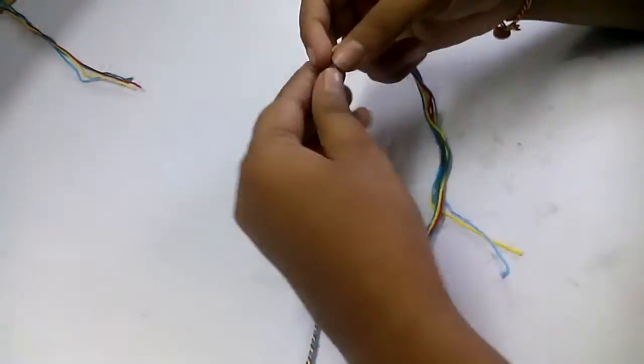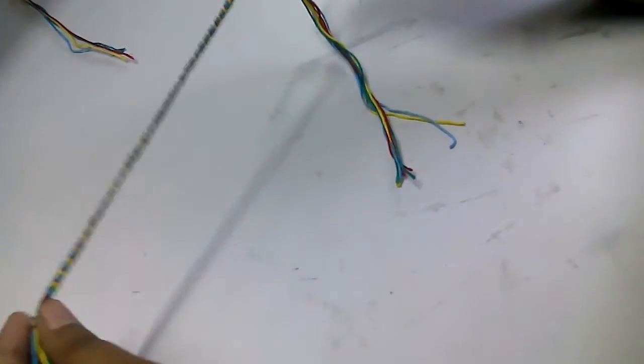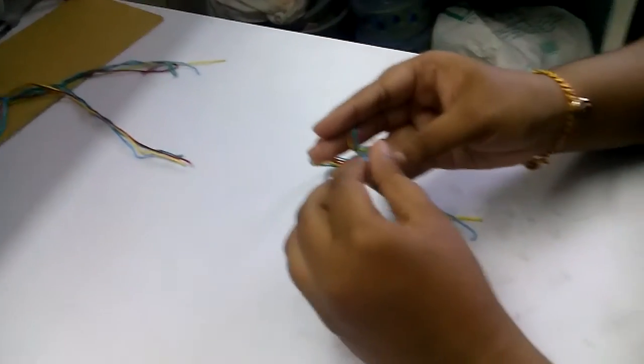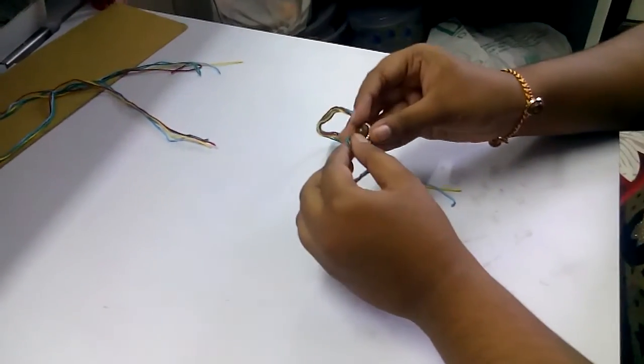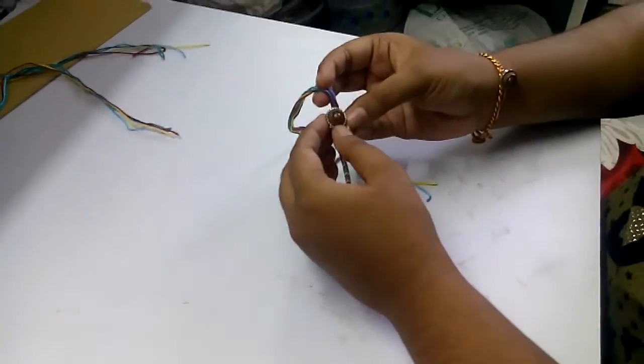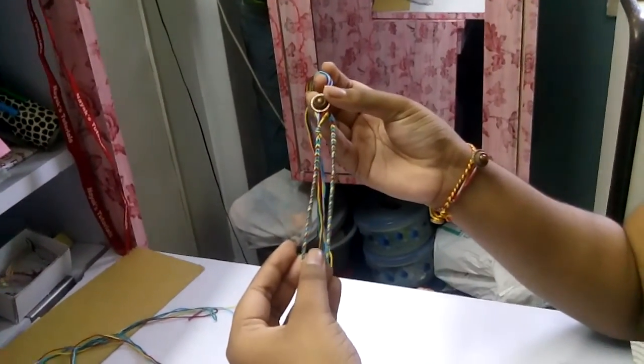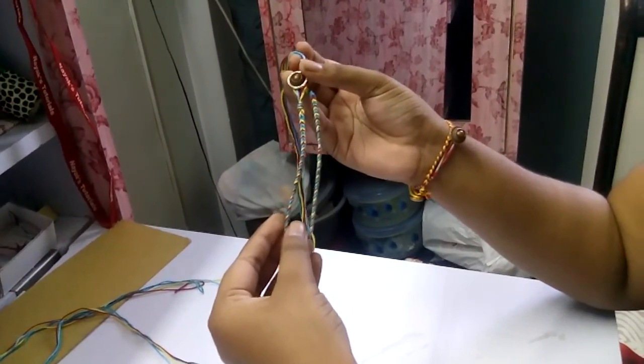Now cut this portion and take the loop onto the button. Do it like this and wear it on your leg. This way, your anklet is ready and will look very pretty on your leg.